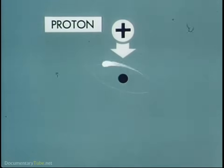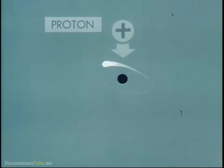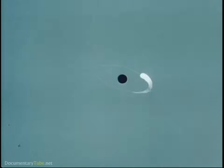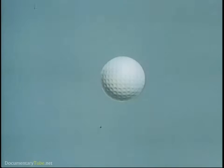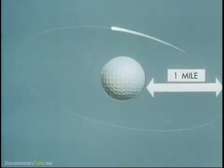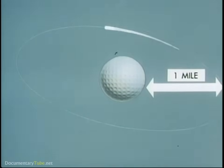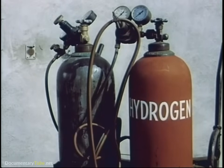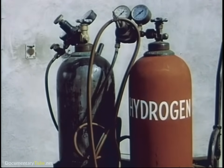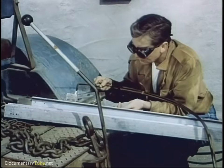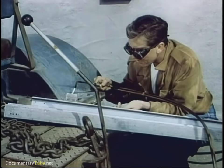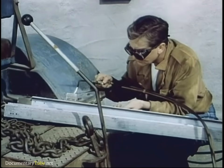To re-emphasize the sub-microscopic nature of our subject, if we could increase the size of the nucleus proton to that of a golf ball, the route of the electron would be about a mile away. Hydrogen is one of the most common elements found in nature. As a gas, it has many uses. One of them is fuel for welders' torches.